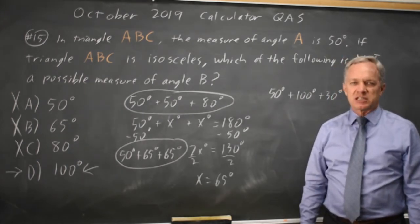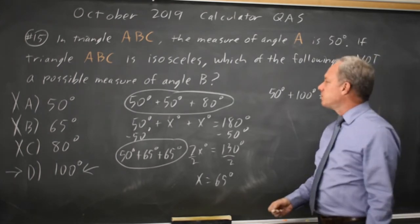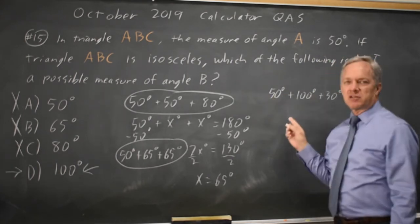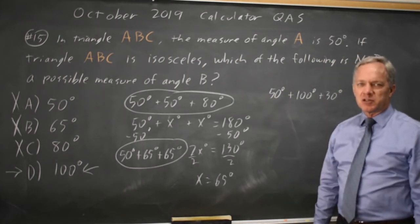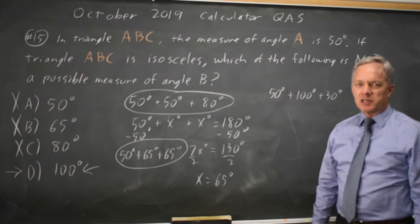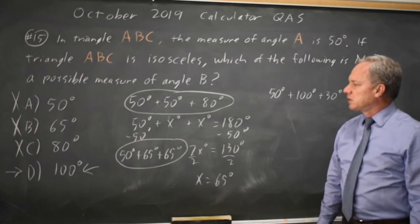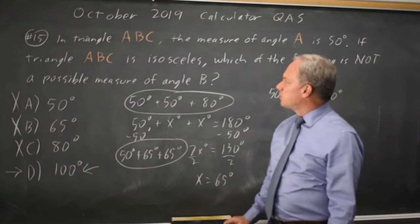which means no two sides are equal. This could not have been an isosceles triangle. If you try to make two of them equal, 50 plus 100 plus 50, or 50 plus 100 plus 100, either way you end up not having a triangle, because triangles add up to 180 degrees, so choice D would be our answer.